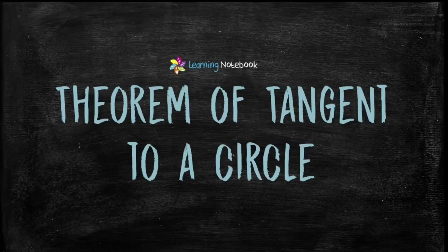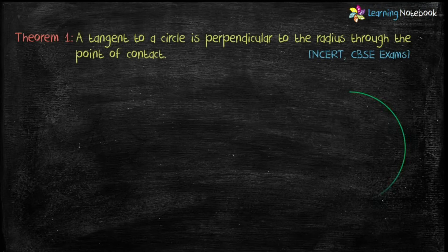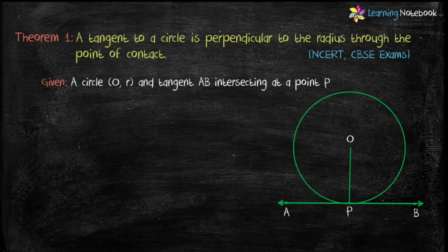Now, let's understand theorem related to tangent to a circle. Let's prove one of the important property of tangent which is our theorem number 1. Theorem says, a tangent to a circle is perpendicular to the radius through the point of contact. We are given a circle with center O and radius R and tangent AB is intersecting at a point P.